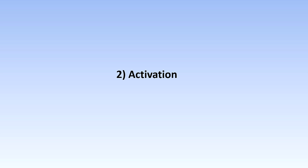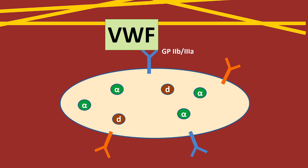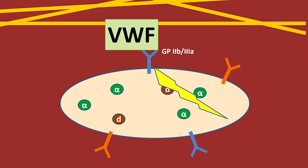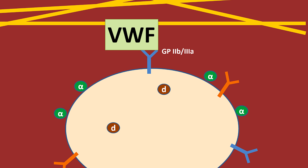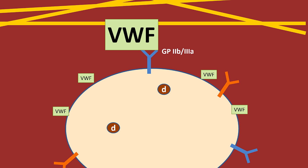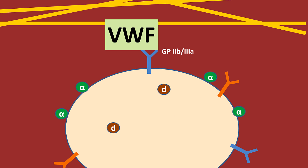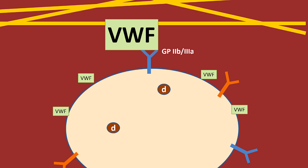In the activation stage, the platelets have stuck to von Willebrand factor via their glycoprotein 2b3a receptor. This causes an intracellular signal to be sent which then activates the whole platelet. It changes shape to increase its surface area and begins to release its granules. The alpha granules contain more von Willebrand factor and fibrinogen. The fibrinogen will eventually become the sticky fibrin mesh via the coagulation cascade.